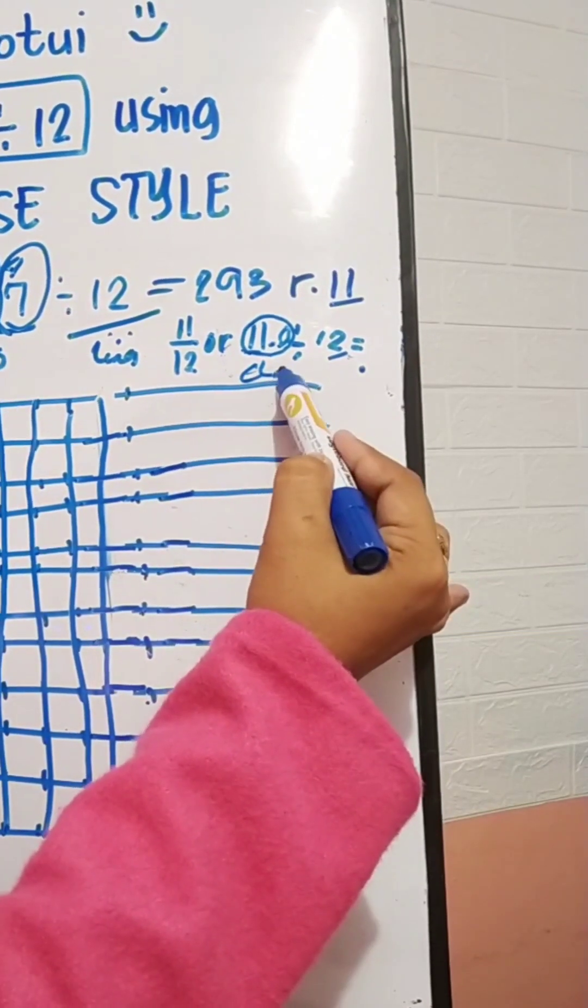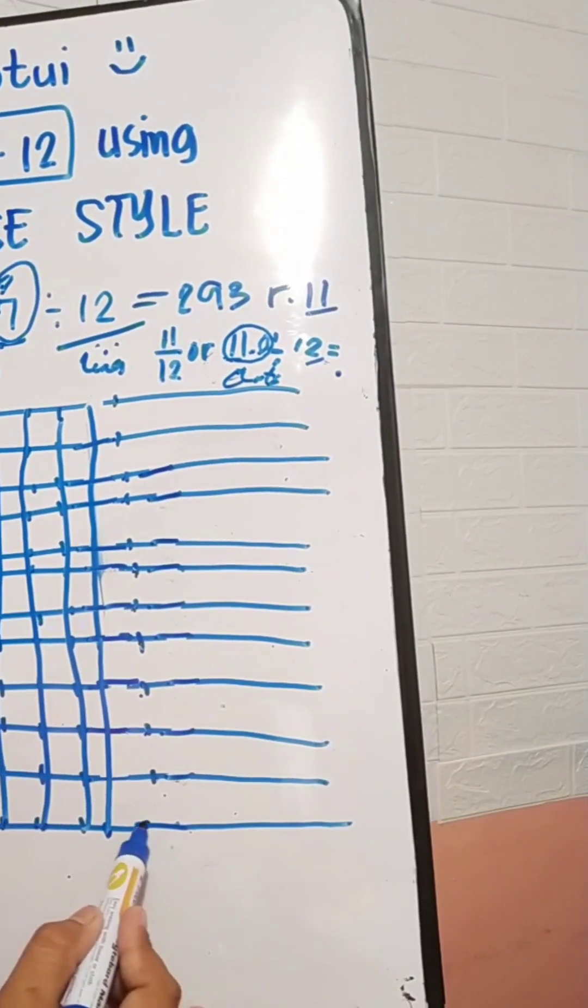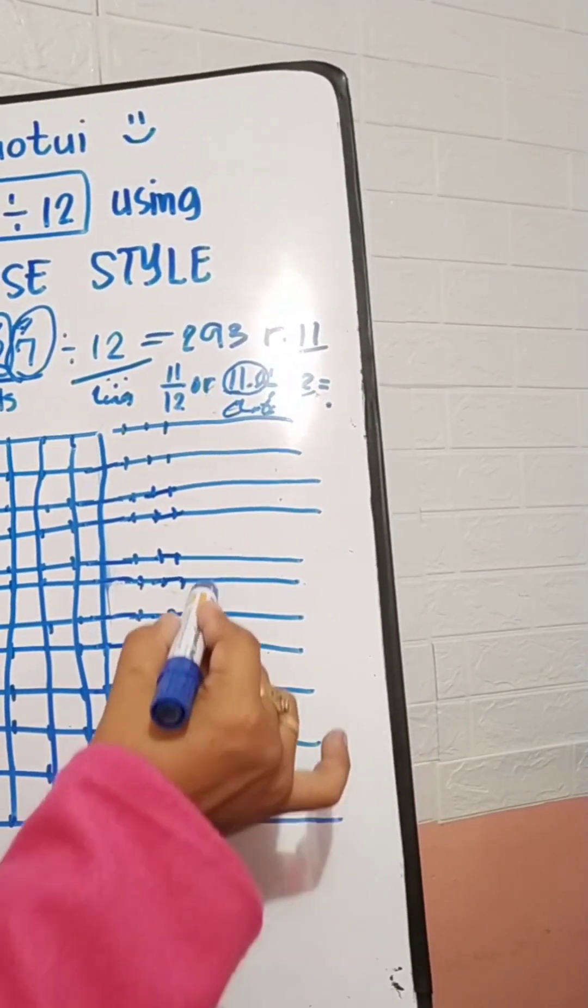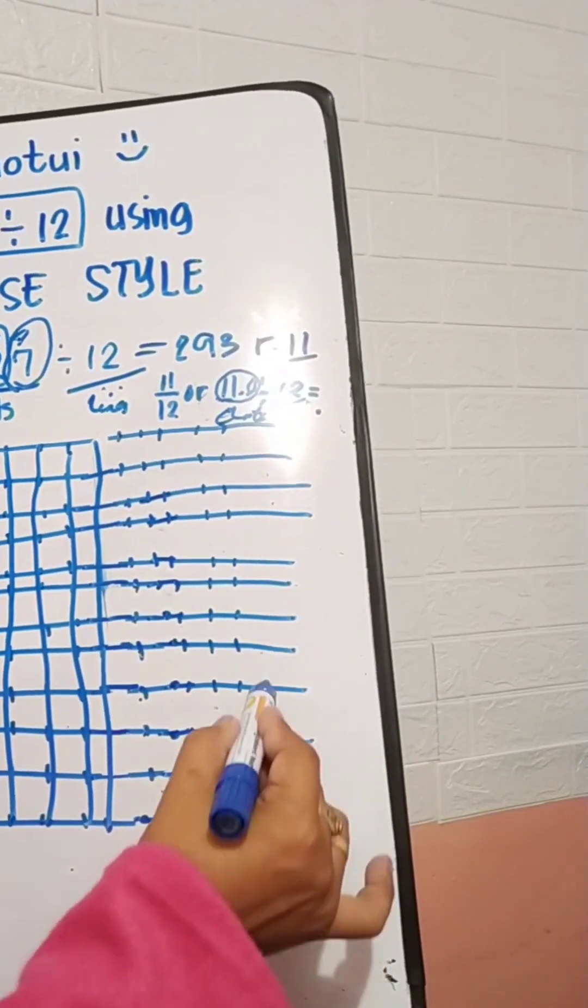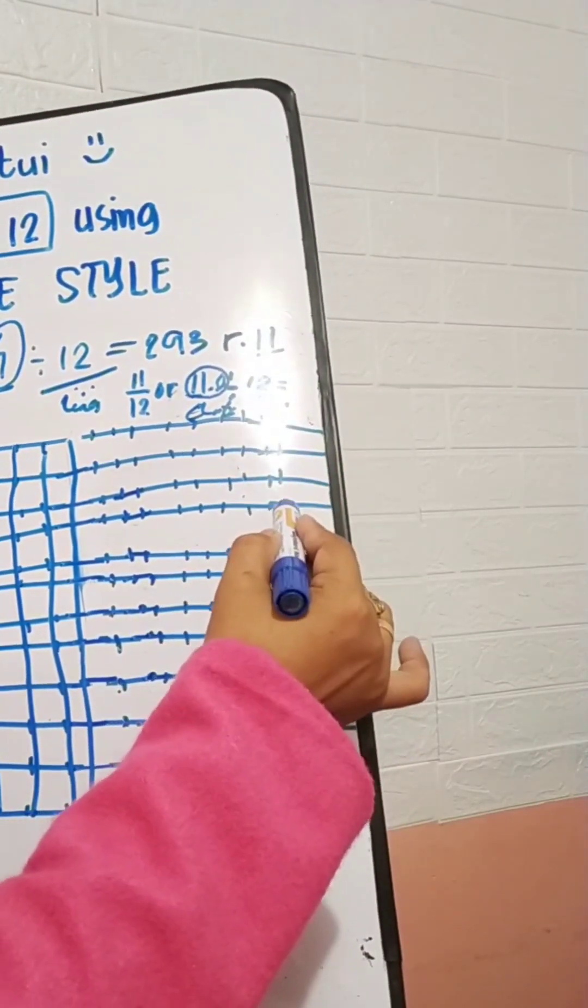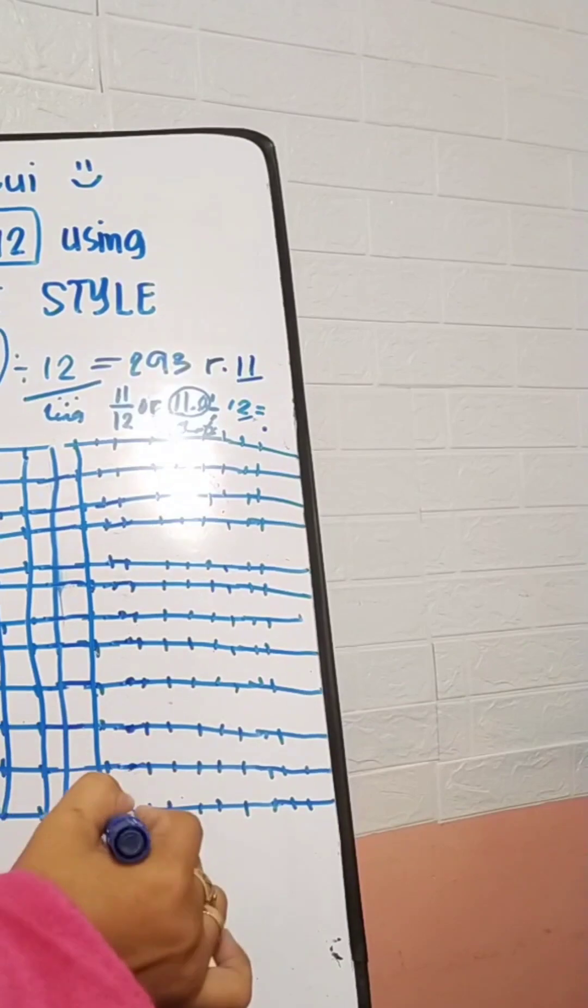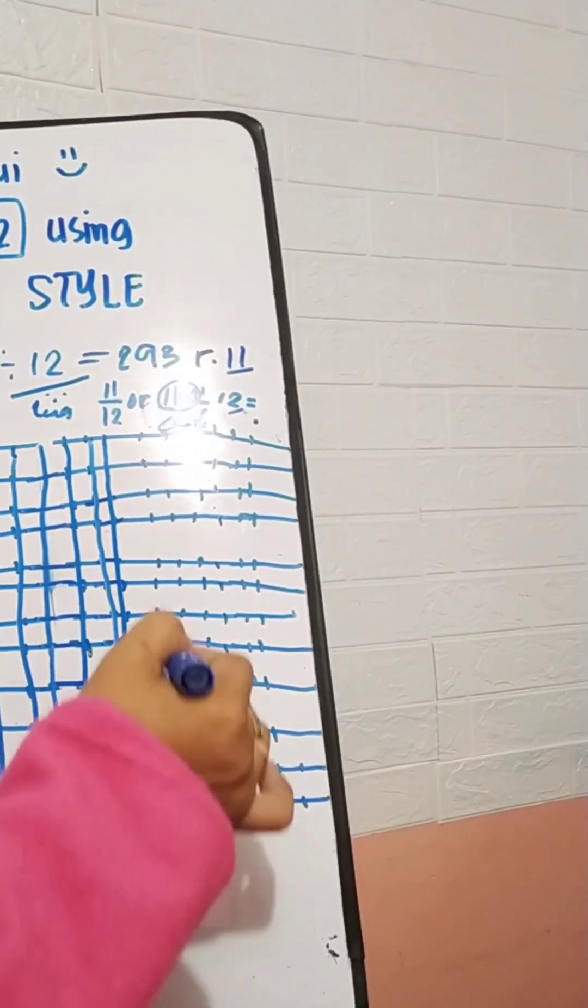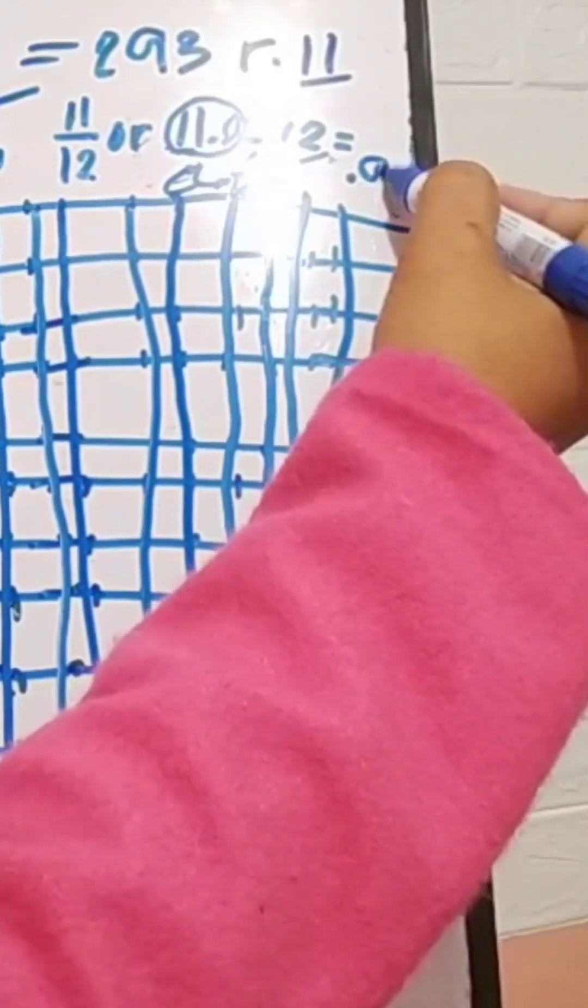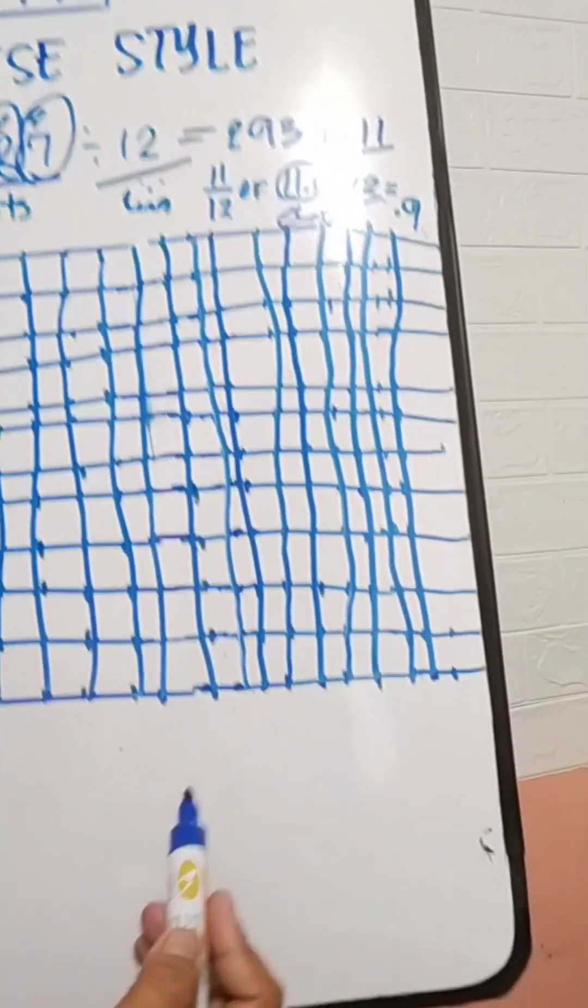So 11 couldn't be, so we will use 110 dots. So we have already 12 lines here, so we will just continue this. 11, 12, 13, 14... Let's connect 1, 2, 3, 4, 5, 6, 7, 8, and 9. So nine, so we have point 9.